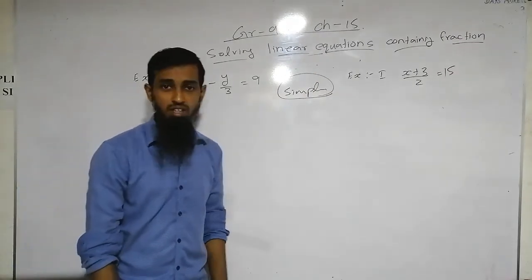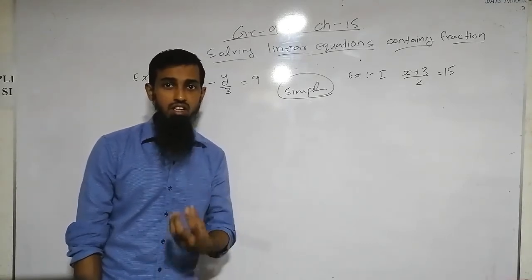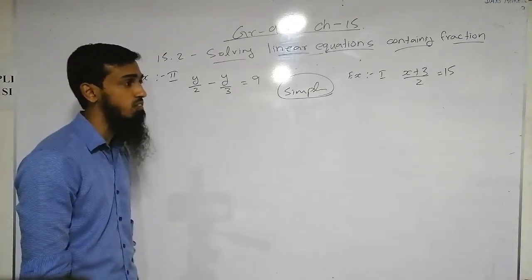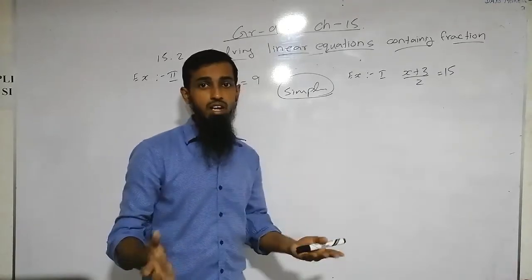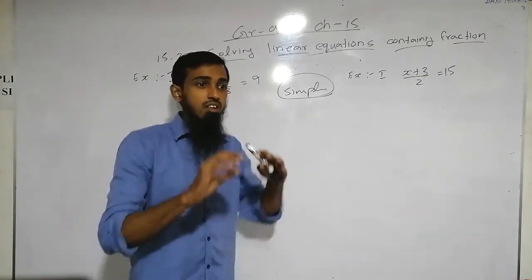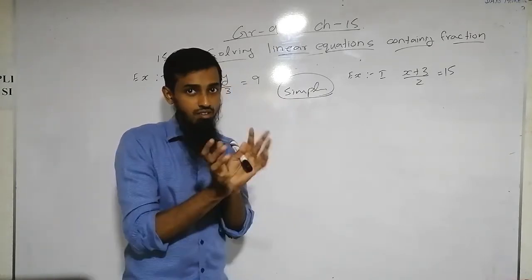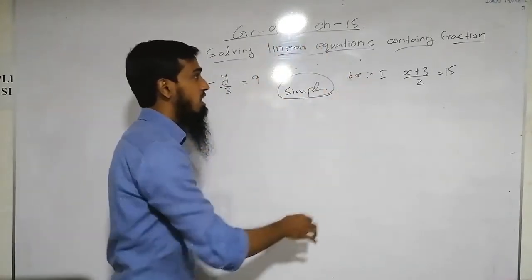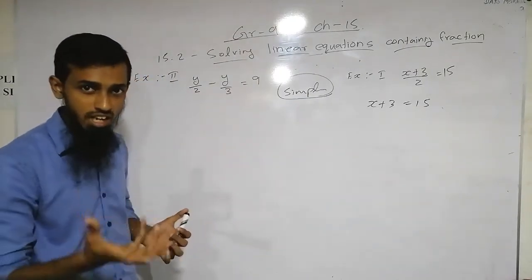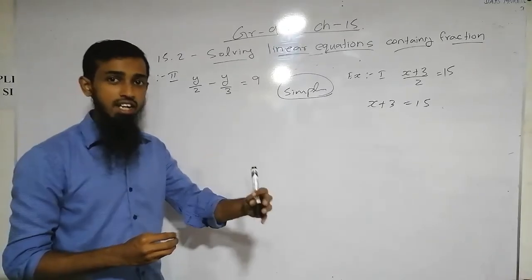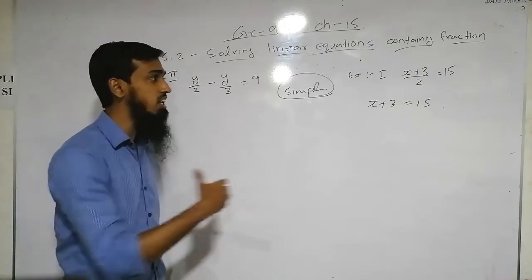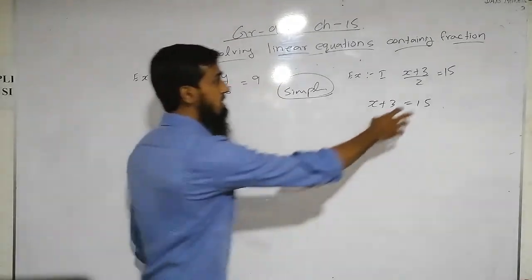If an equation contains only one algebraic term, we call it a simple equation or linear equation. We will discuss some examples and learn how to simplify and find the unknown term with fractions. The first example: (x + 3) / 2 = 15. Like removing brackets in the earlier step-by-step method, once we remove the denominator we get a simple equation like we studied in grade 8.